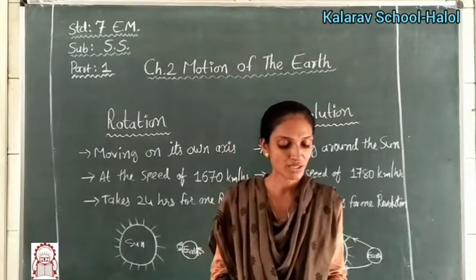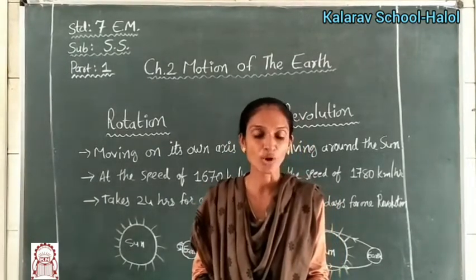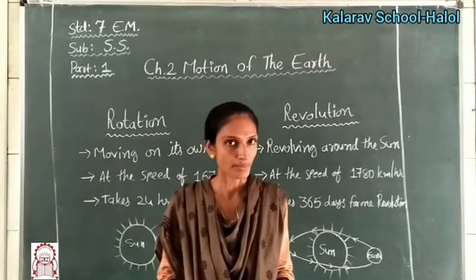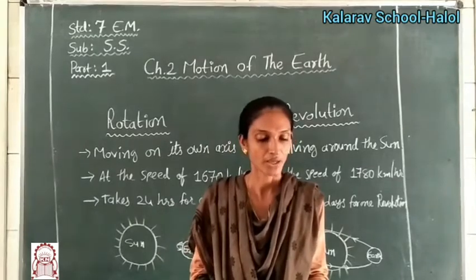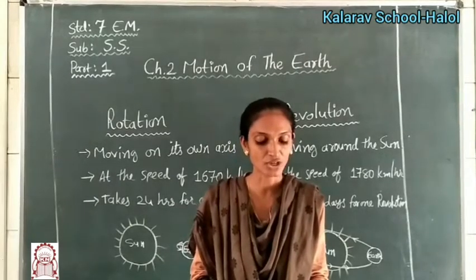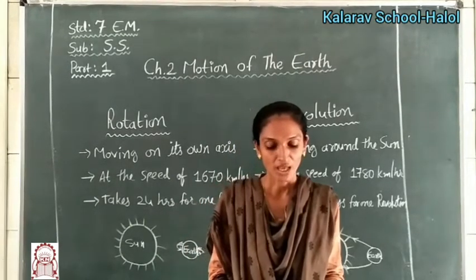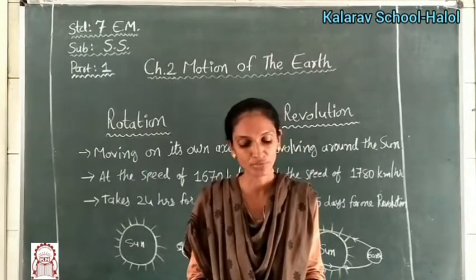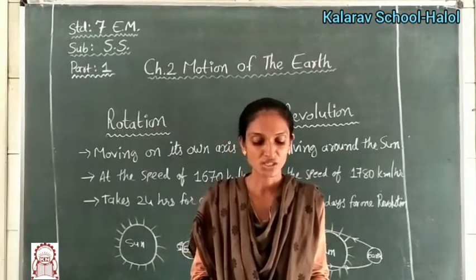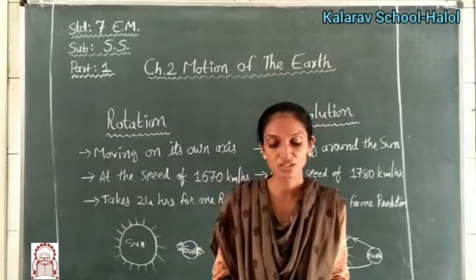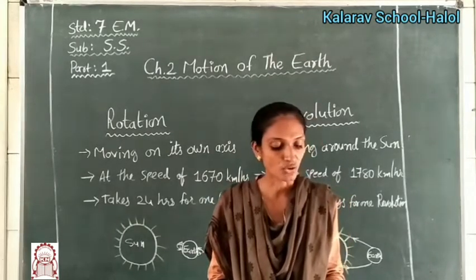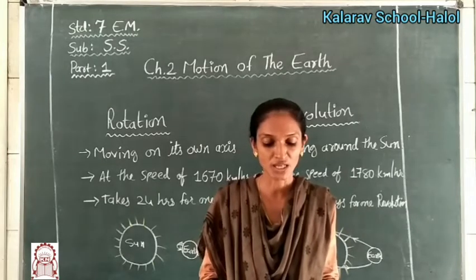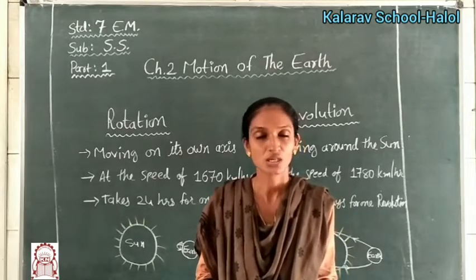The earth makes an angle of 23.5 degrees on its axis and 66.5 degrees to its orbit. The tilt of the earth on its axis causes the varying length of day and night and also causes changes in the seasons.